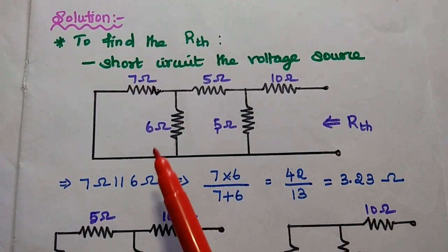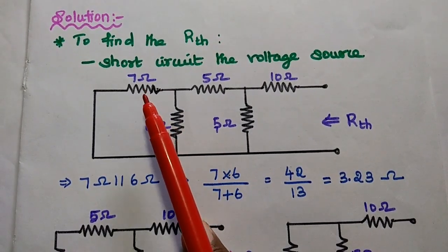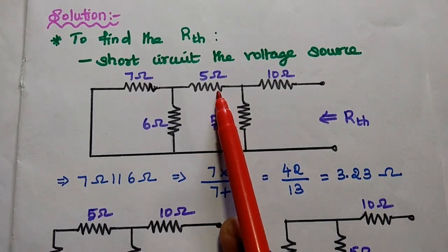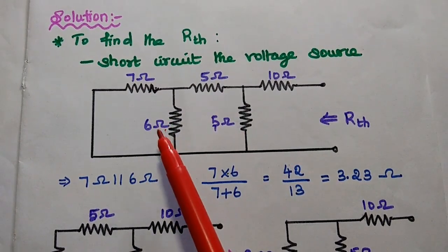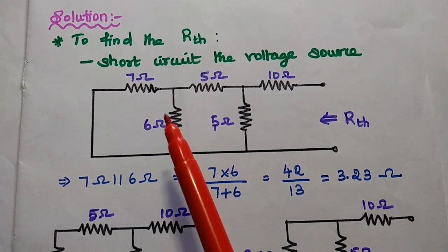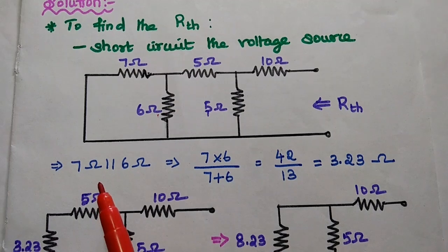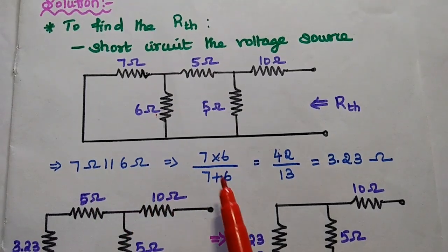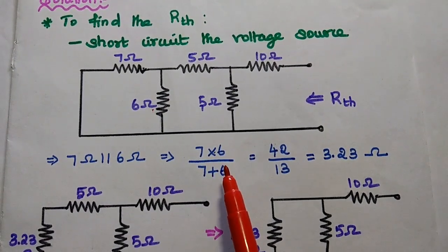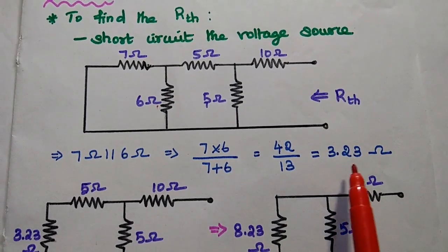We can simplify the resistance values step by step. This 7 ohm and 6 ohm are in parallel, and then in series with this 5 ohm. Since both ends are connected, it is a parallel connection. So 7 in parallel with 6 ohm equals 7 × 6 divided by 7 + 6, that is 42 divided by 13, which equals 3.23 ohm.